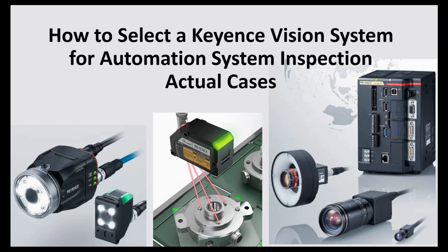To select a vision system, firstly you need to think about what kind of system you need and what kind of requirements come from the customer. Some machines need to check part presence, while others need to inspect the quality, flaws, or defects of parts produced by the machine. That means different cases or different requirements need different tools.